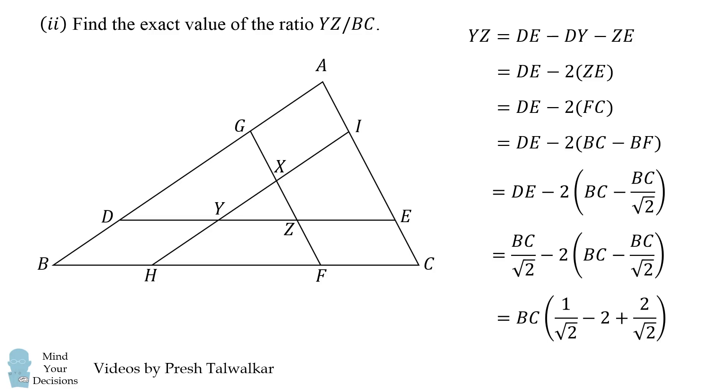So we now factor out the BC and simplify and we get the following expression. We then just need to divide both sides by BC so that we get YZ divided by BC is equal to 3 minus 2 times the square root of 2, all over the square root of 2. And that's our answer.